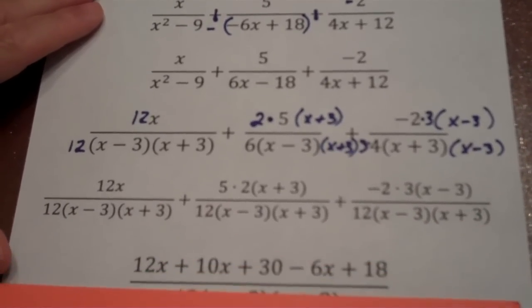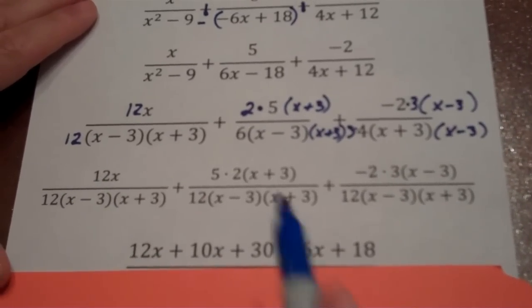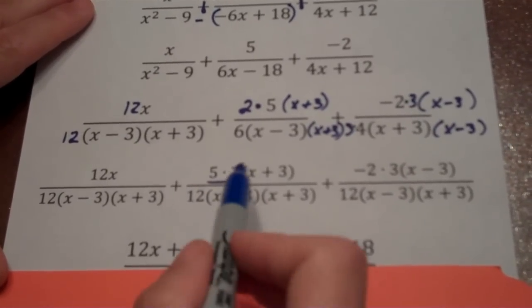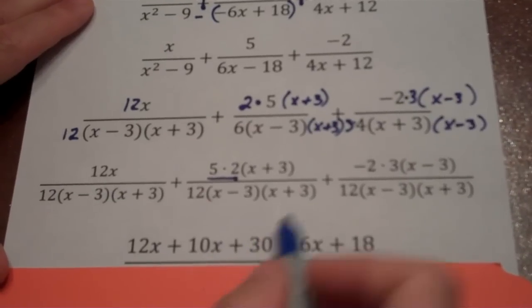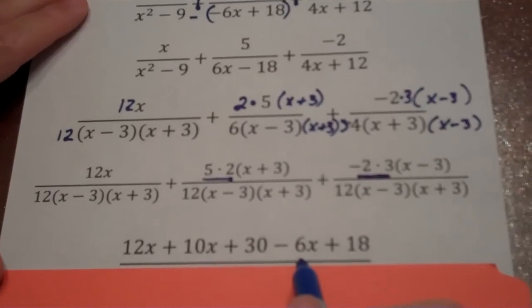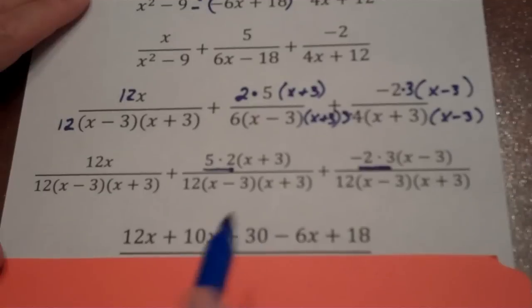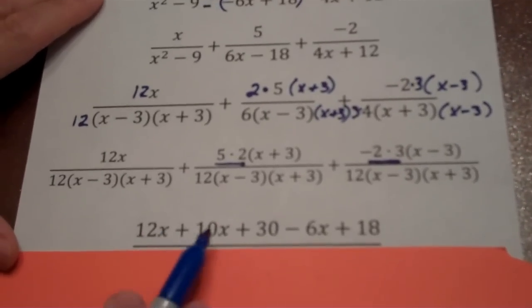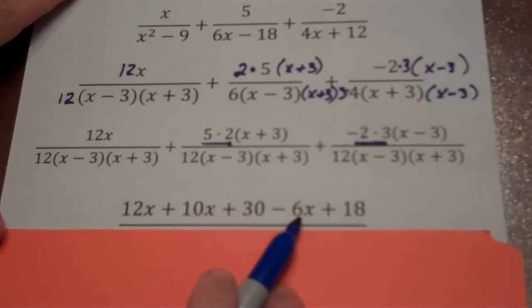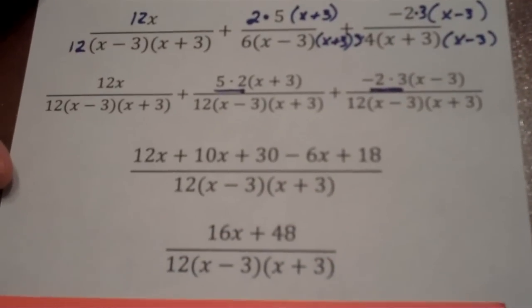Let's go ahead and do a little arithmetic and simplify this. First of all, 12x is 12x. There's nothing to do on that one. Here we have 5×2 is 10×x would be 10x. 10×3 is 30. -2×3 would be -6×x is -6x. And -6×-3 is positive 18. Let's combine our like terms now. 12x and 10x is 22 minus 6x is 16x. And 30 + 18 is 48. So we have a 16x + 48.